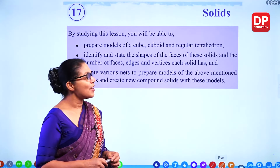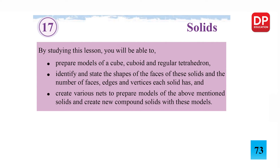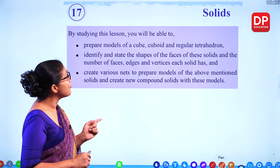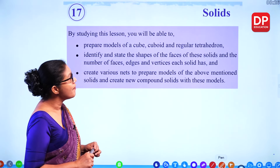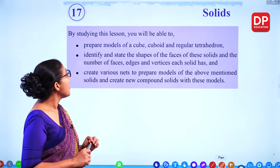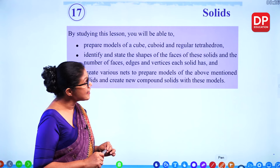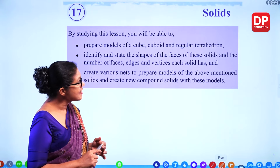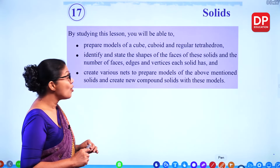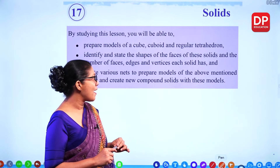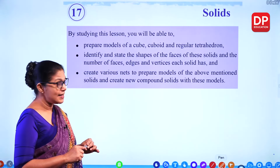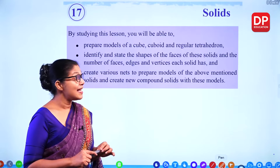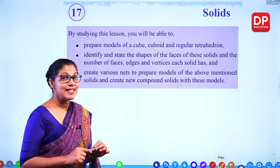Hello children. Today I am here to teach you Chapter 17 in your textbook — that's Solids. In this lesson, we will prepare models of cube, cuboid, and regular tetrahedron, and identify the shapes of their faces and the number of faces, edges, and vertices each solid has. We will also create various nets to prepare models of these solids and create new compound solids with these models.